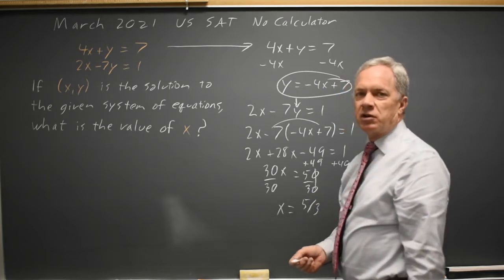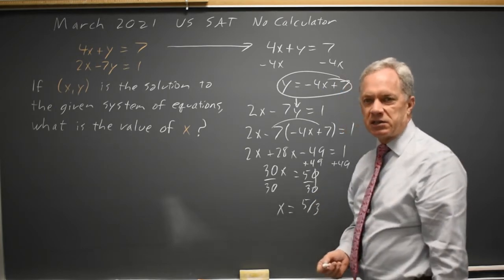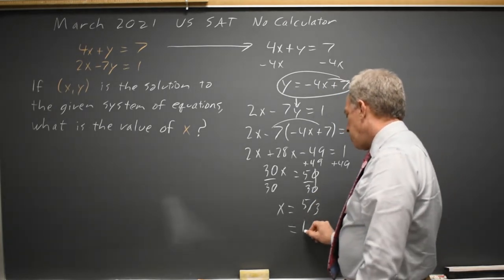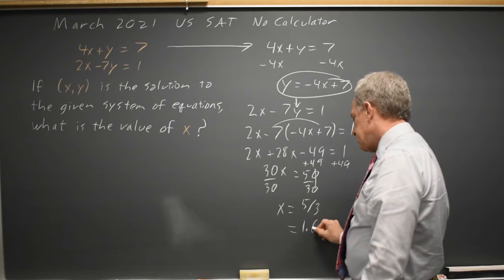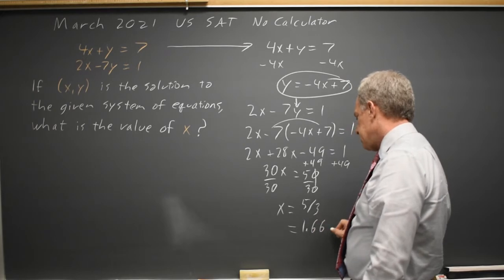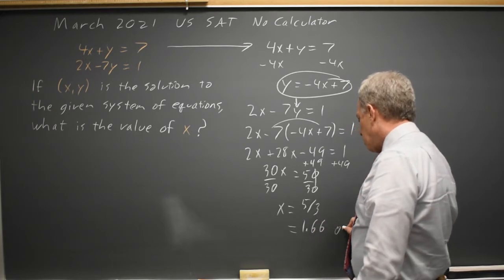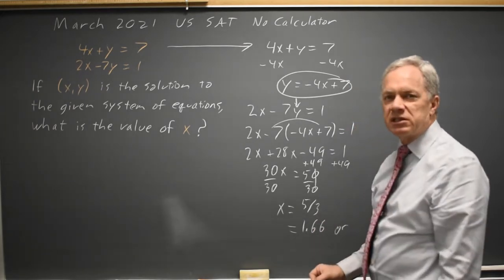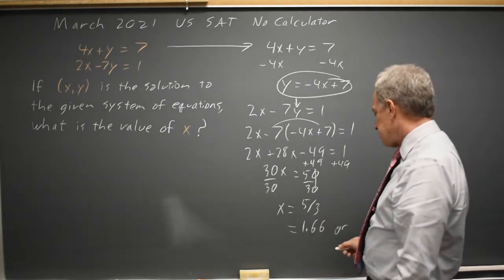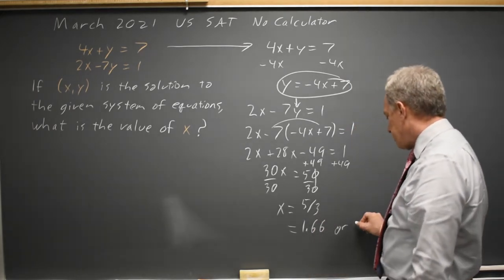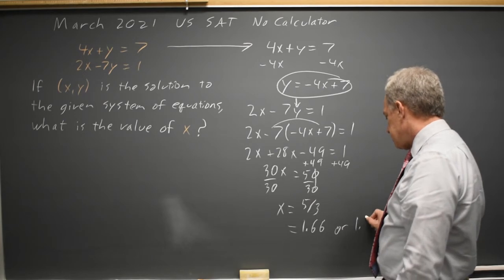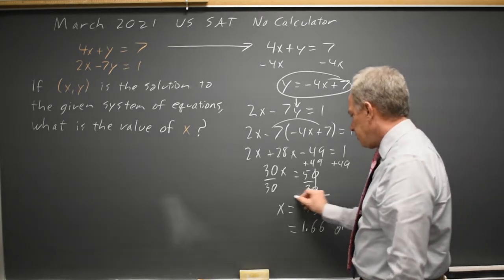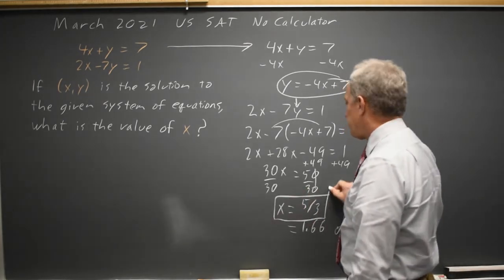We can also write that as a decimal: 1.66, or since it's 1.666 repeating, we can round it to 1.67 — but I would input 5 thirds.